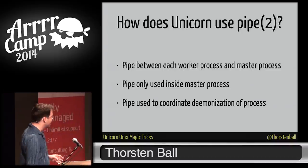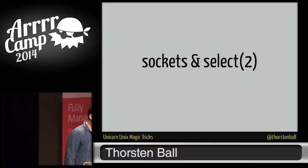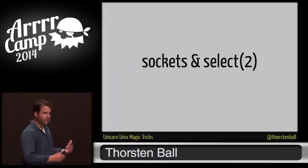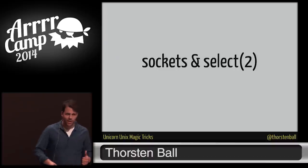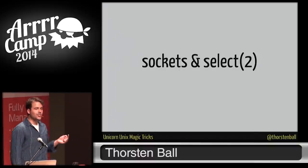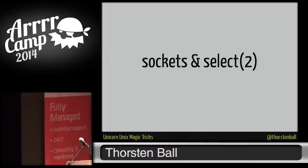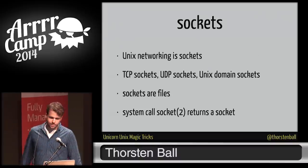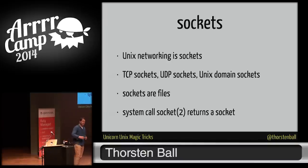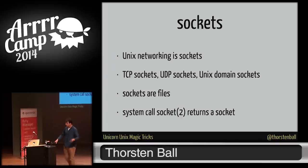So let's talk about sockets and select. Sockets are everything that has to do with networking in Unix. If you want to open or listen for a connection — TCP, UDP, Unix domain sockets, raw sockets, SCTP — that's all sockets. And select is a system call that lets us monitor and handle sockets. The Unix networking API is called the sockets API. And as it turns out, sockets, just like pipes, are files — they have the same API. It's just a number you can read from and write to.